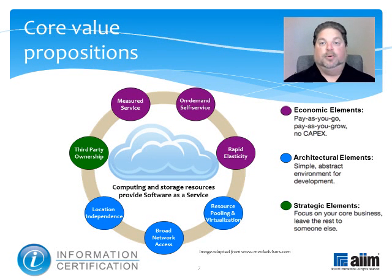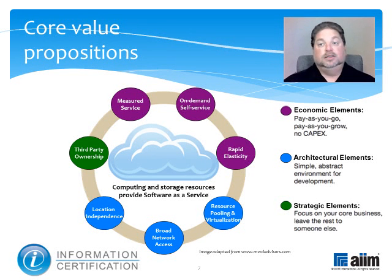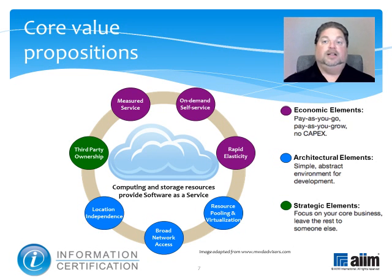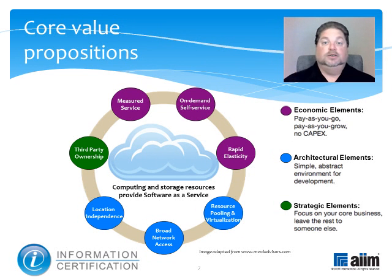On-demand self-service is another value point. With cloud computing, a consumer can unilaterally provision computing capabilities such as server time and network storage, as needed and automatically, without requiring human interaction with each service provider. Business end users can self-provision applications and user accounts with a few mouse clicks, knowing in advance what the additional per-user cost is going to be and enjoying nearly instant availability. Rapid elasticity is also a plus. Cloud capabilities can be elastically provisioned and released, in some cases automatically, to scale rapidly outward and inward according to demand. Rather than tap into a fixed set of resources, users can add or remove capacity at will and only pay for what they actually use.